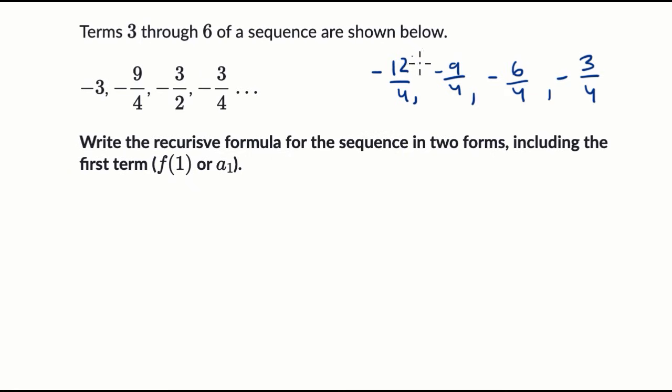So when you write it this way, it looks pretty clear that we are decreasing by three fourths every time. You take three fourths, oh, sorry. No, we are increasing by three fourths because we started at negative 12 fourths. You add three fourths, you get to negative nine fourths. So every time we are adding three fourths.